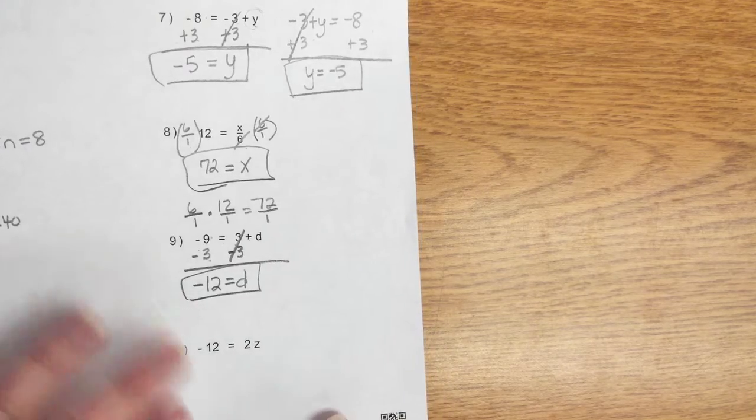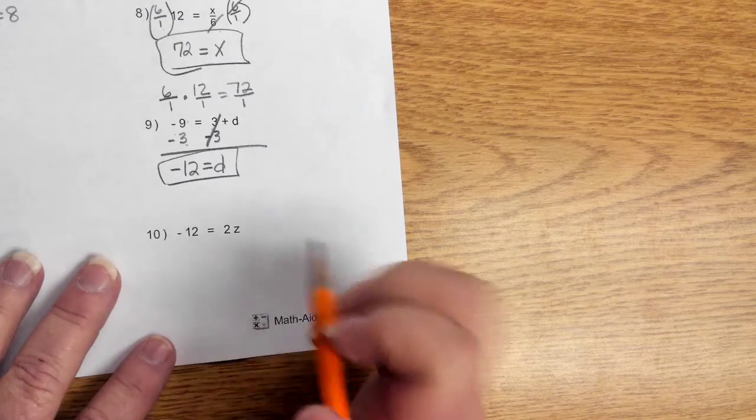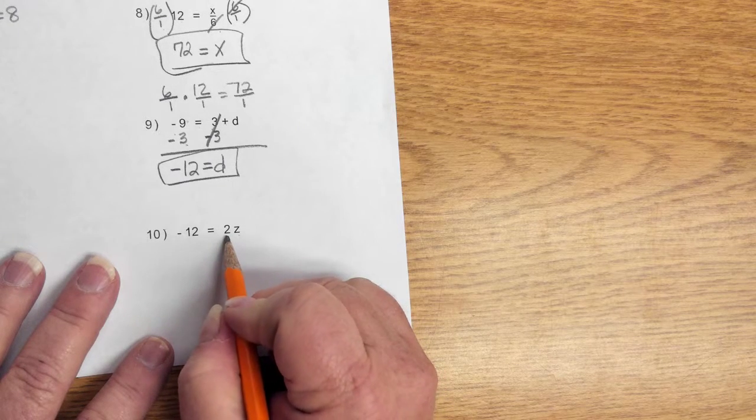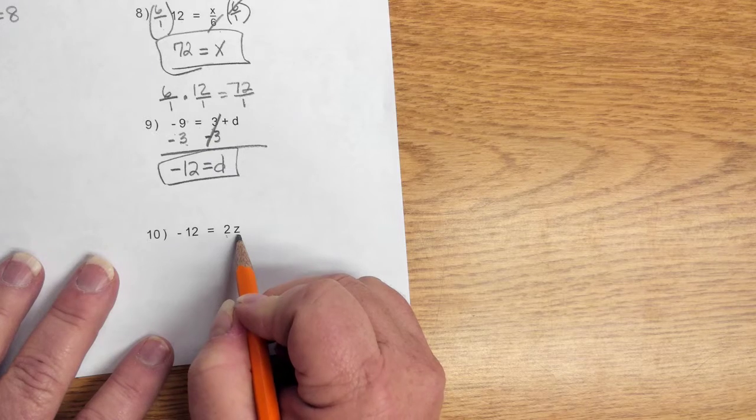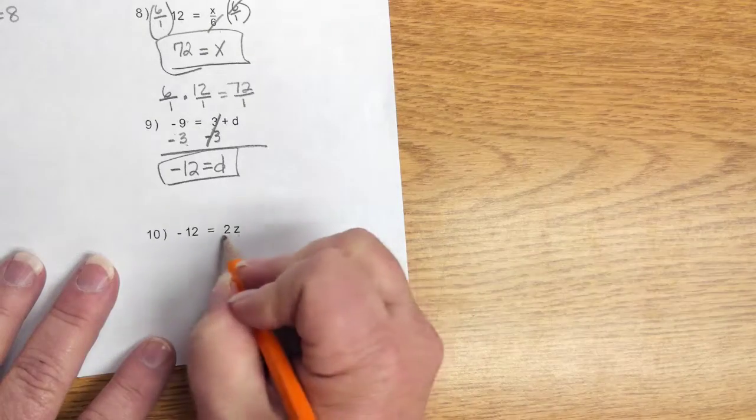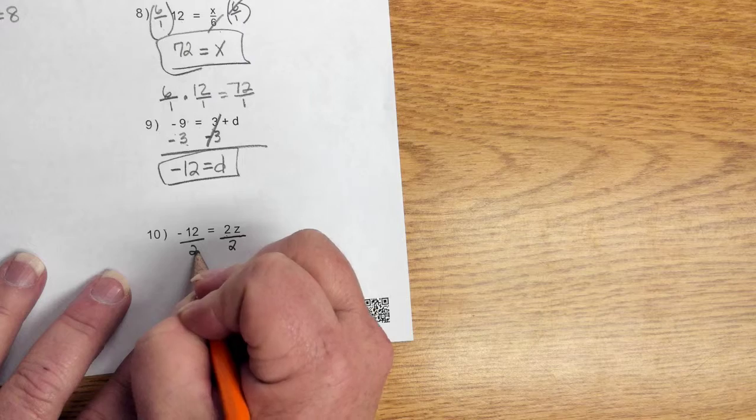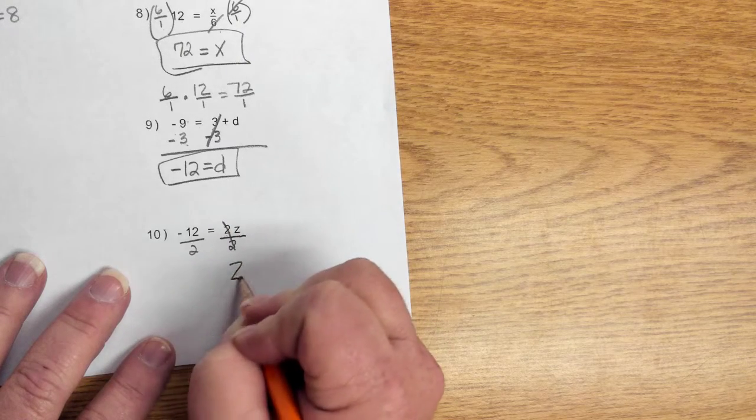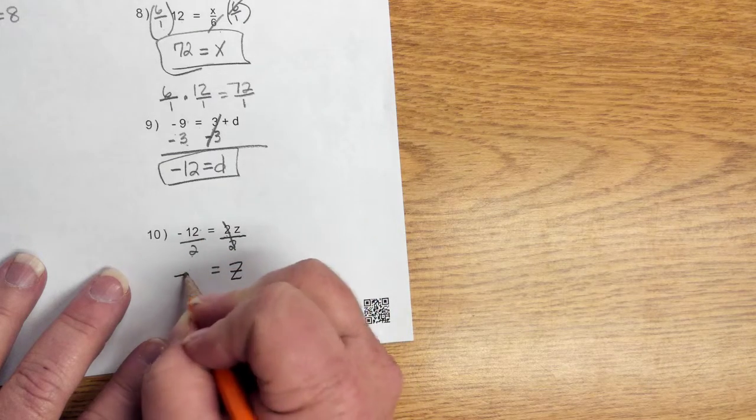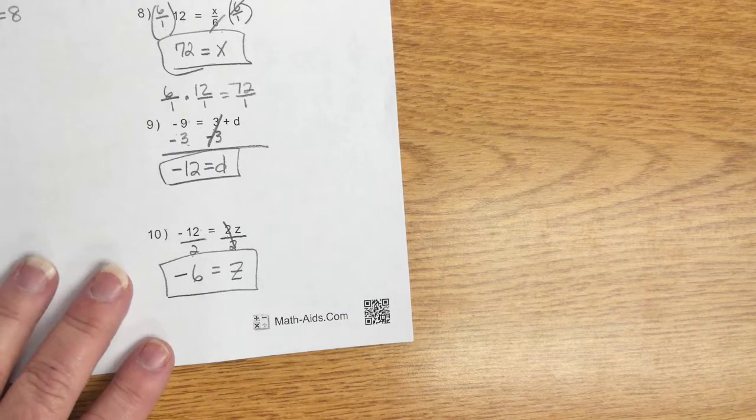Last example for today is negative 12 is equal to 2Z. Well, 2 times Z, that's multiplication. Anytime you have a number right next to a variable, you are multiplying those. We want to undo that operation, and we use the opposite operation. We divide by 2. We divide by 2. And we get Z is equal to negative 12 divided by 2 is going to give us negative 6. Please box your answers so your teacher can find them easily.